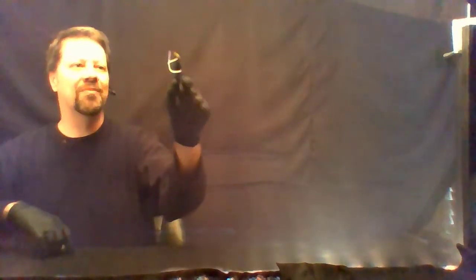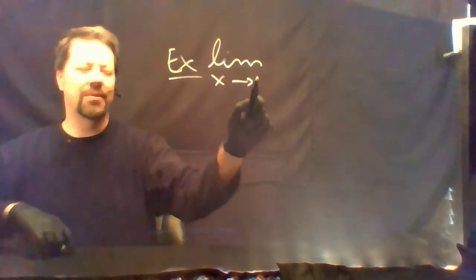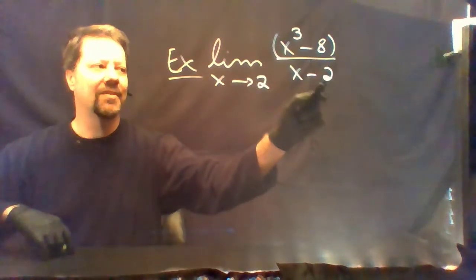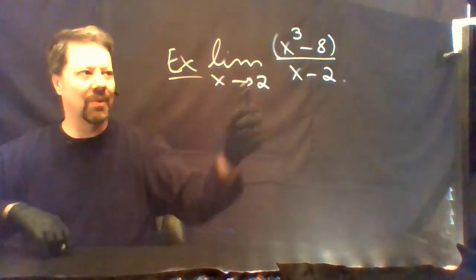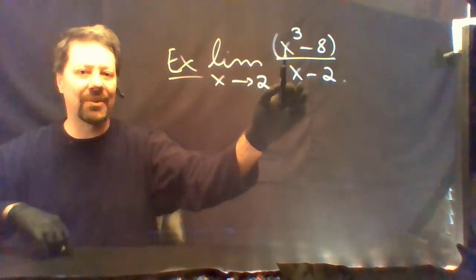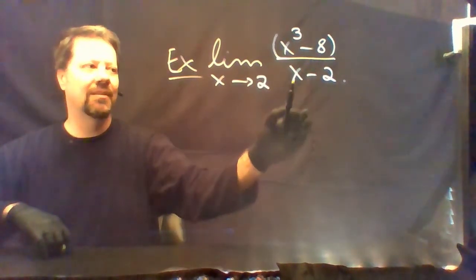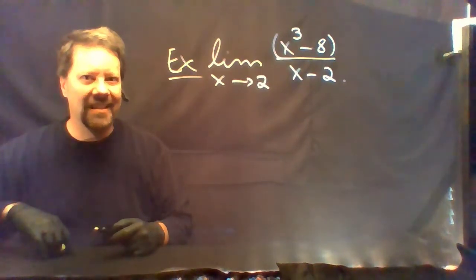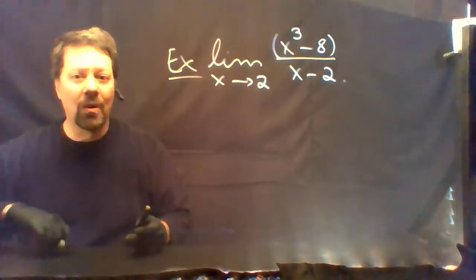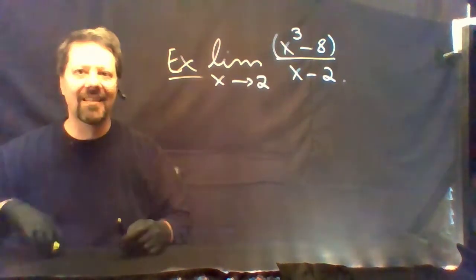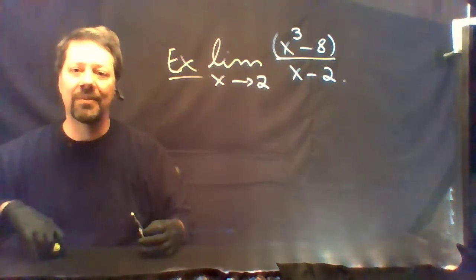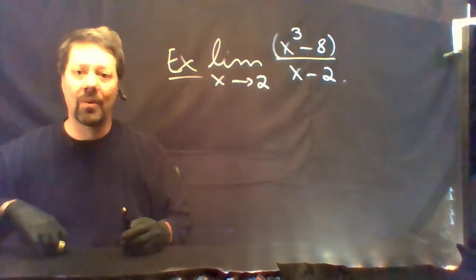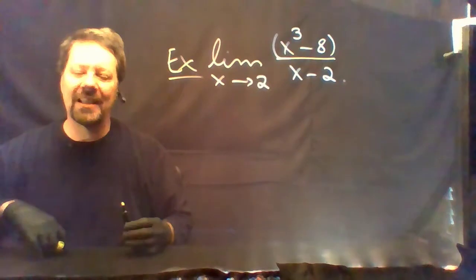Let me give you another example. Suppose I'm taking the limit as x goes to 2 of x cubed minus 8 over x minus 2. If you plug in x equals 2, you get 2 cubed minus 8 equals 0 in the numerator and 2 minus 2 equals 0 in the denominator — you get 0 over 0. That means more work. The extra work requires that we cancel the factor of x minus 2 by dividing it into the numerator, which we can do by either long division or synthetic division.